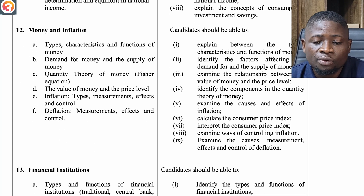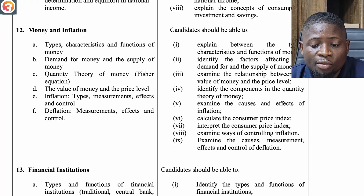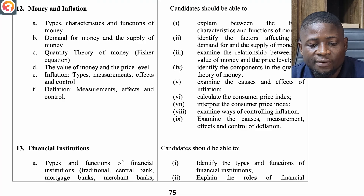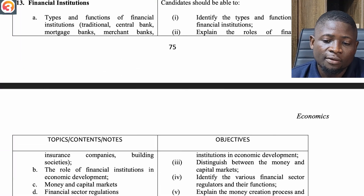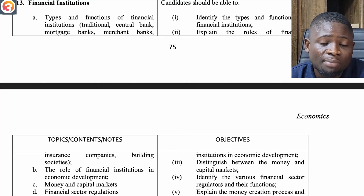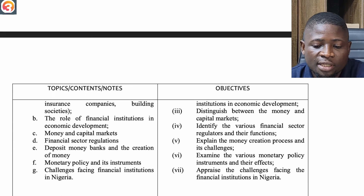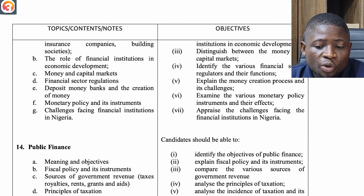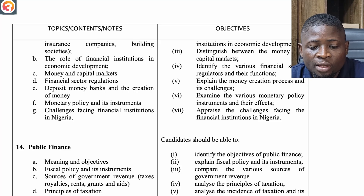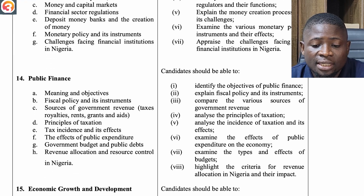The twelfth topic is Money and Inflation — types, characteristics and functions of money; demand for money; supply of money; quantity theory of money and the Fisher equation; the value of money and the price level; inflation — types, measurement, effects and control; and deflation — measurement, effects and control. The thirteenth topic is Financial Institutions — types and functions: traditional, central bank, commercial banks, merchant banks, insurance companies and building societies; role of financial institutions in economic development; money and capital markets; financial sector regulations; deposit money bank credit creation; monetary policy and its measurement; and challenges facing financial institutions in Nigeria.